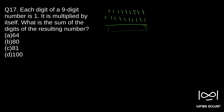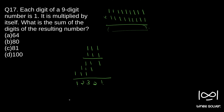Instead of multiplying everything directly, there is a pattern here. Let's first take three ones and see what the pattern is. If you multiply three ones, you get 1 2 3 2 1. So if you take four ones, you get 1 2 3 4 3 2 1.